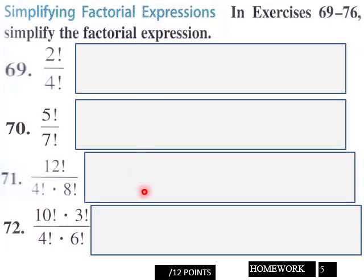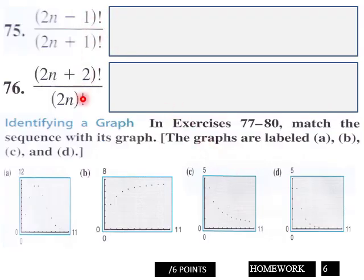Page five: simplify these factorial expressions. You got twelve points for page five.